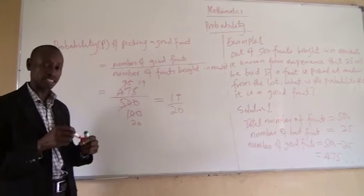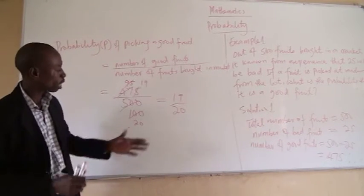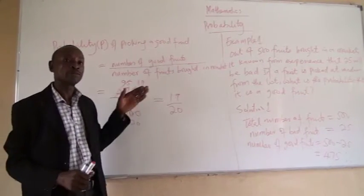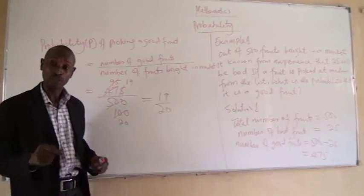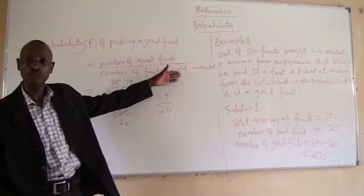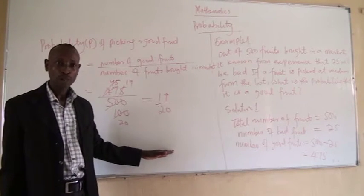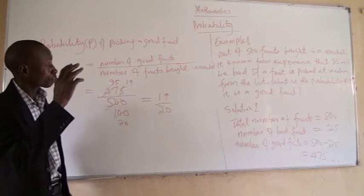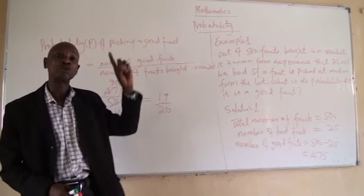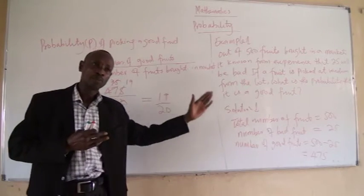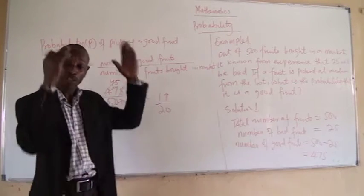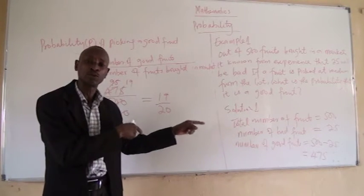Remember, at the beginning we said probability is a ratio, and ratio means fraction. So at the end of the day it boils down to a fraction. This is a fraction because not all the fruits are good. If all the fruits were good, then for you to pick a good fruit the probability would be 1 — that would give us 500 good fruits all over 500. And that is where the fraction comes in, because anyone you pick represents a section, either good or bad.